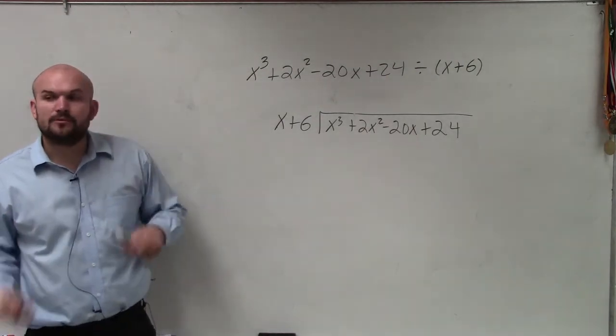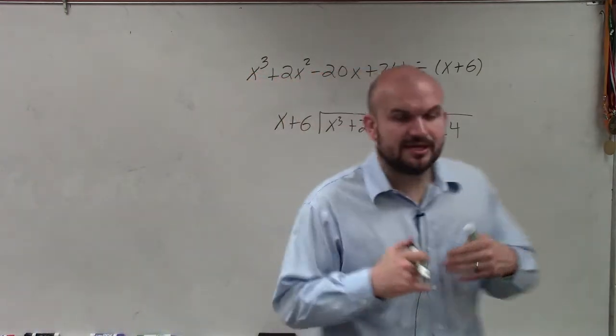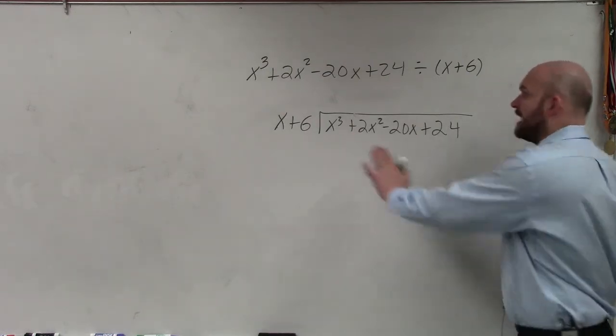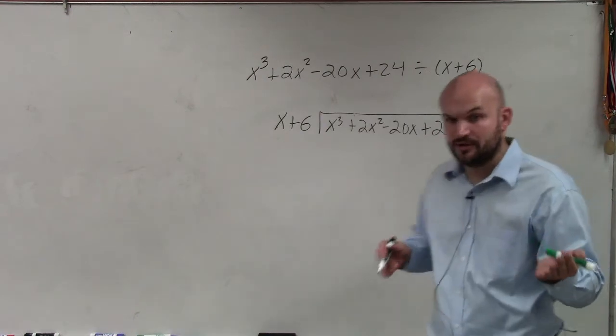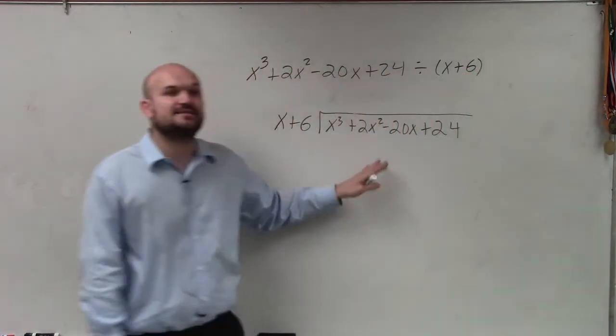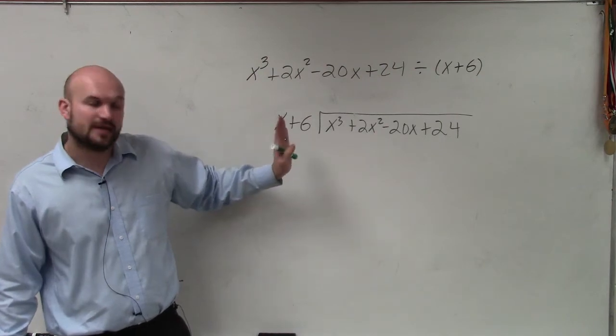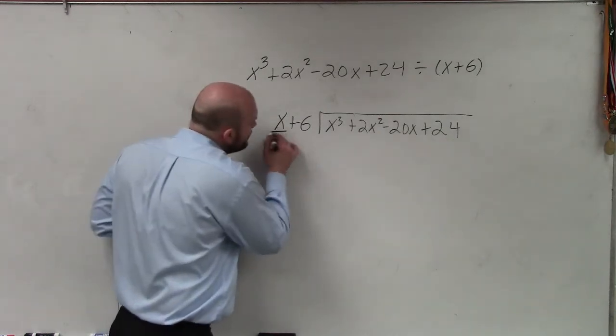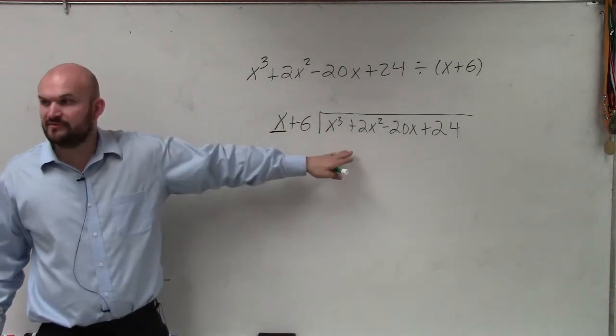Now, when we're applying long division, the first important thing is to make sure that your dividend as well as your divisor are in descending order. Do we have that in this case? Yes. So now, what we do is we take our first term of our divisor and we divide that into the first term of our dividend.